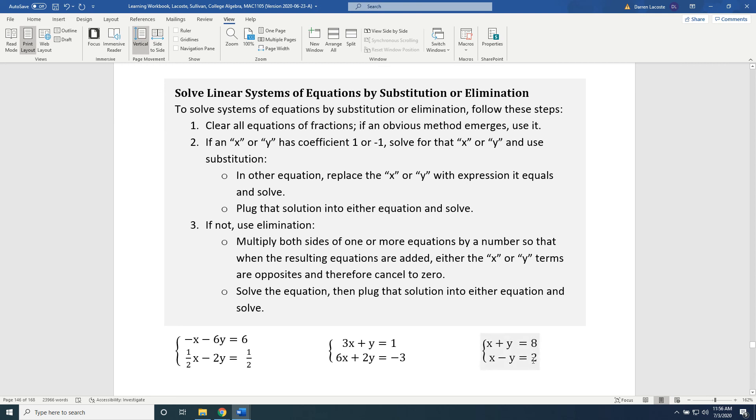which cancels, and 8 plus 2, which is 10. So the resulting equation would say 2x equals 10, which is very easy to solve. Divide by 2 on both sides and get x equals 5. Okay,